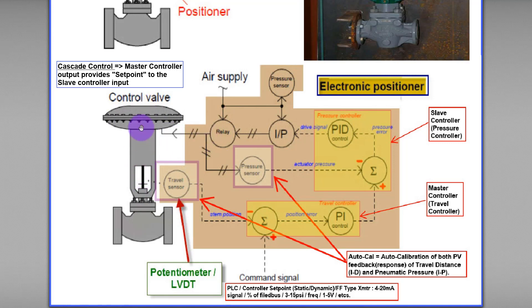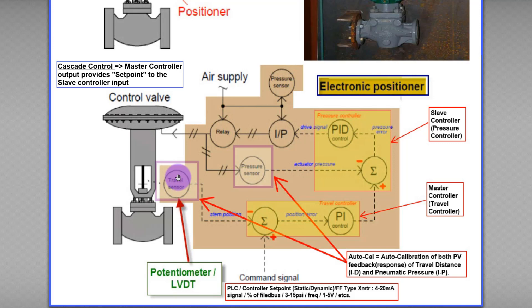This pneumatic pressure causes the control valve stem to move up and down based on the set point given by another controller such as a PLC. The movement of the control valve stem is measured by the travel sensor located inside the positioner — a potentiometer or LVDT (Linear Variable Differential Transformer). This travel position process variable is then fed back as input to the master controller, completing the cascade control loop. This is the basic principle of operation of an electronic positioner.